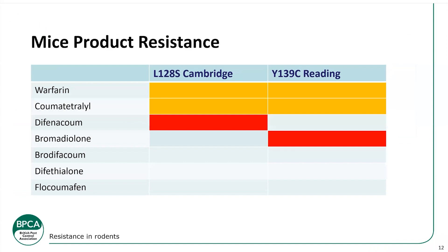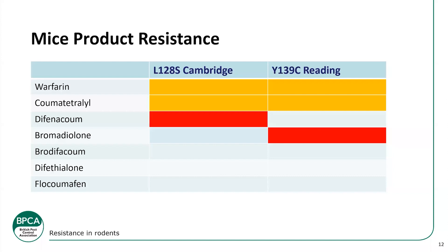The active ingredient chart for mice is similar to the one for rats. Warfarin and coumatetralyl may work against some strains in certain areas, but resistance has been found to difenacoum in the Cambridge strain and to bromadiolone in the Reading strain.